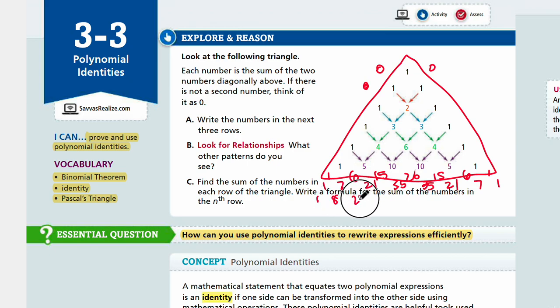And then we have 1, 8, 28, 56, 70, 56, 28, 8, and 1. Okay, so the next three rows. So the pattern continues.